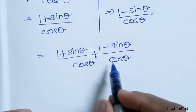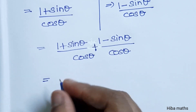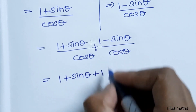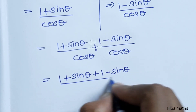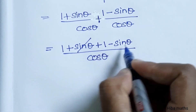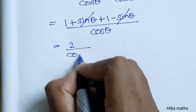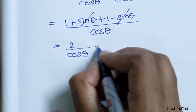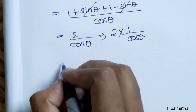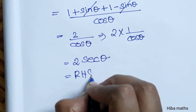Now we add the two results together. Both terms have the same denominator cos theta, so we get (1 plus sin theta plus 1 minus sin theta) divided by cos theta. The sin theta terms cancel, giving 2 divided by cos theta. This equals 2 times (1 by cos theta), and since 1 by cos theta equals sec theta, we get 2 sec theta, which is our RHS. Hence proved.